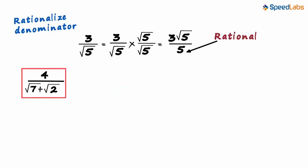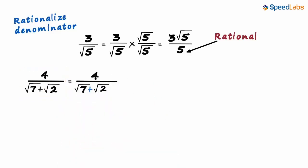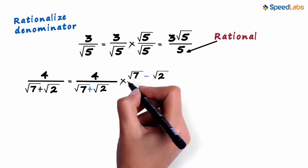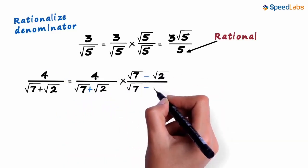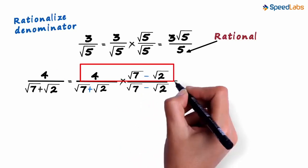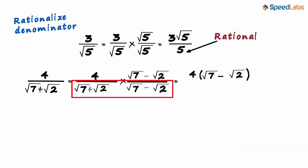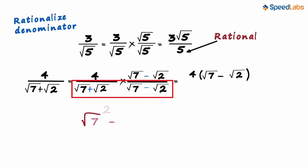We write this expression as 4 divided by (√7 plus √2), multiplied by (√7 minus √2) divided by (√7 minus √2). The numerator will equal 4 multiplied by (√7 minus √2). The denominator is in the form A plus B times A minus B, which equals A squared minus B squared. Using this identity, we can write the denominator as √7 squared minus √2 squared.